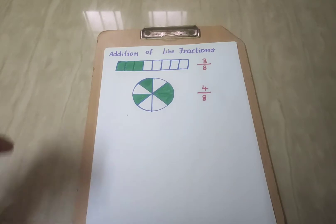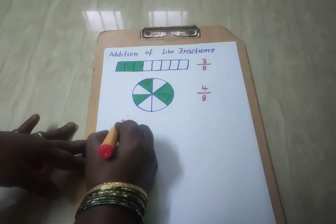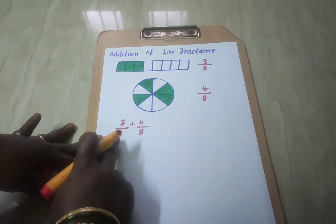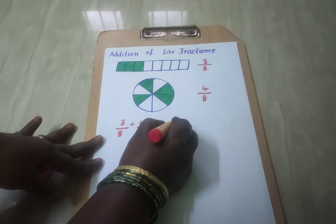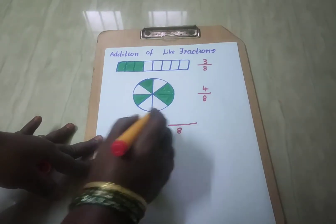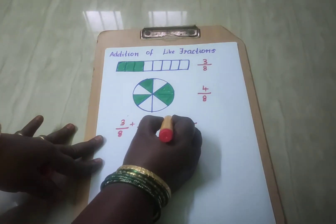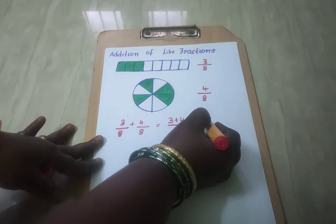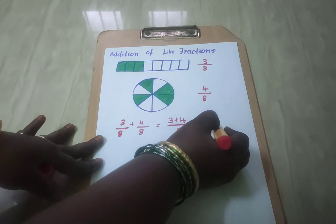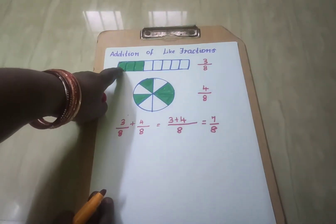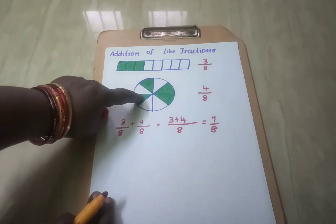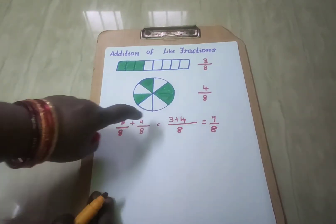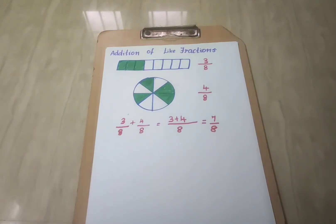So, how to add this fraction? First write 3 by 8 plus 4 by 8. Here both the denominators are same. So write the denominator as it is and add the numerators. 3 plus 4 is equal to 7 by 8. You add the shaded parts — 7 in total. So your answer is 7 by 8. This is the way to add like fractions.